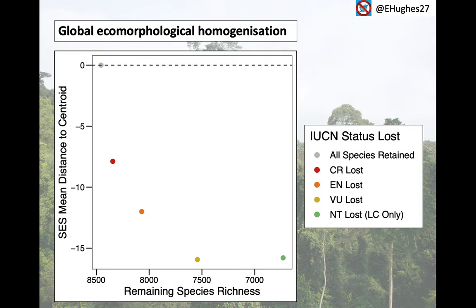We did this for the whole global list of bird species, and this is what we found. This plot shows remaining species richness across the x-axis, going from intact to only least concerned species remaining. The y-axis shows the SESS of mean distance to centroid. As you can see, as IUCN categories are removed, the SESS becomes considerably negative. A value lower than minus 2 shows a significant deviation from that expected by chance. We are seeing a clear impact of ecomorphological homogenisation across birds.